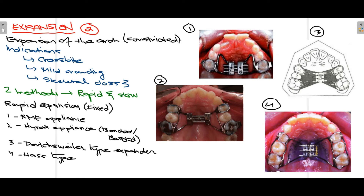The Derexweiler-type expander and the HAAS-type expander are both used to expand the arch. These are the four basic rapid expansion fixed appliances used for expansion of the maxillary arch.